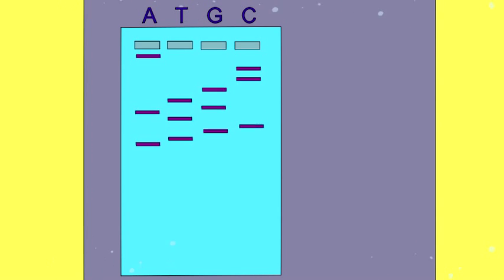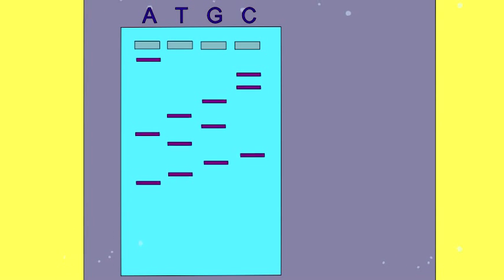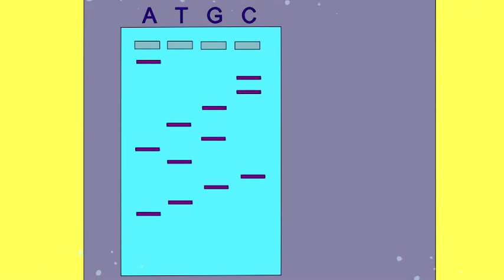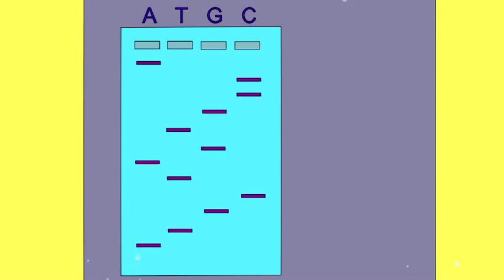The shortest fragments will run the greatest distance from the well where the samples were loaded. Three bands will appear in the lane run with adenine, corresponding to the three separate size fragments which end in adenine.